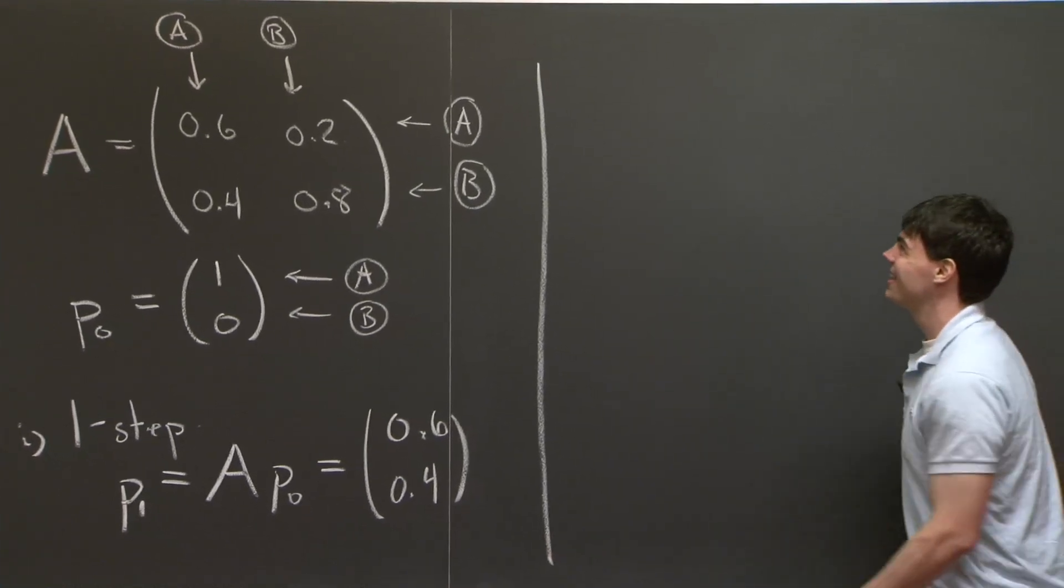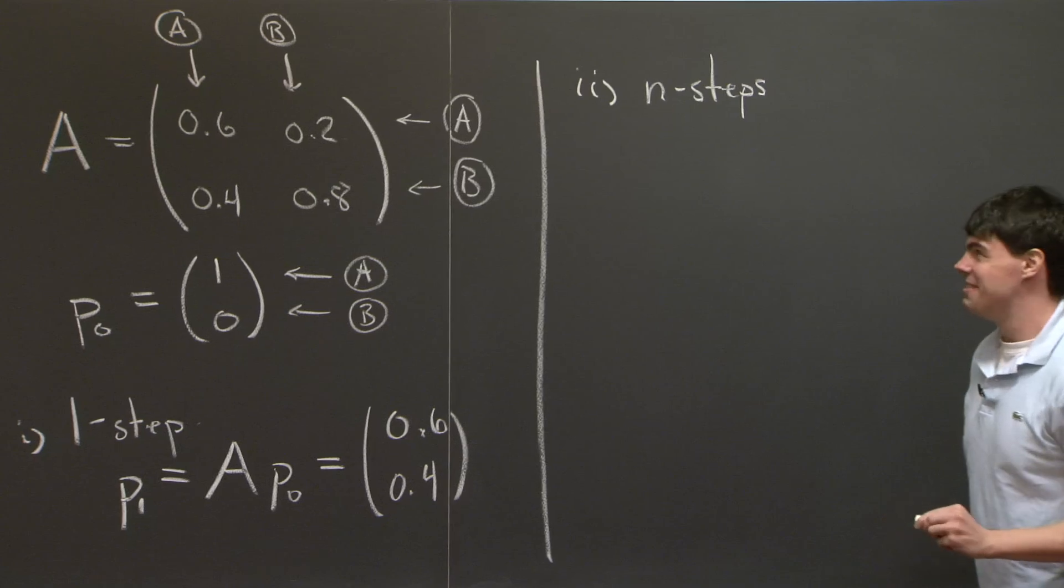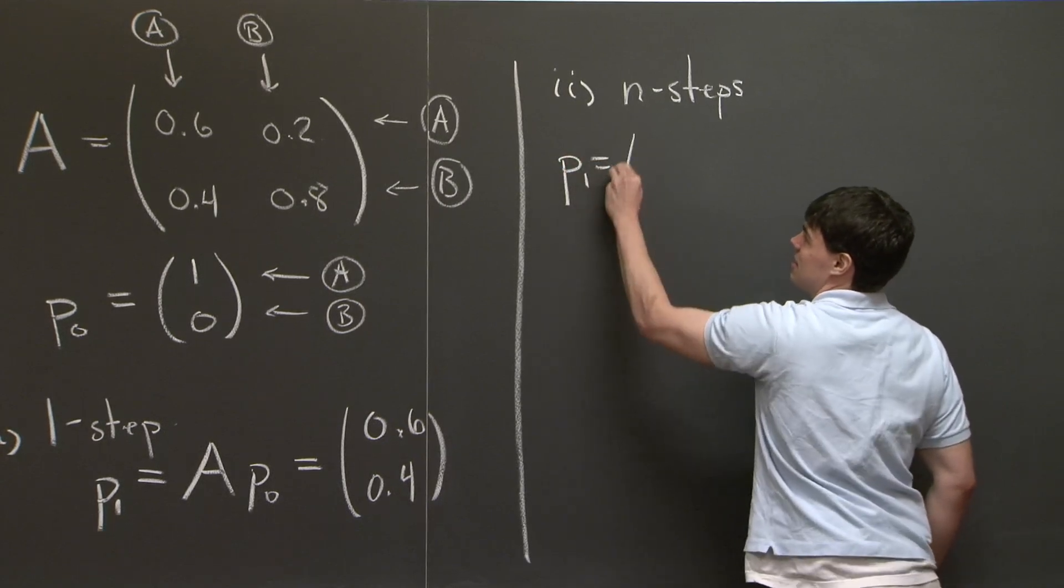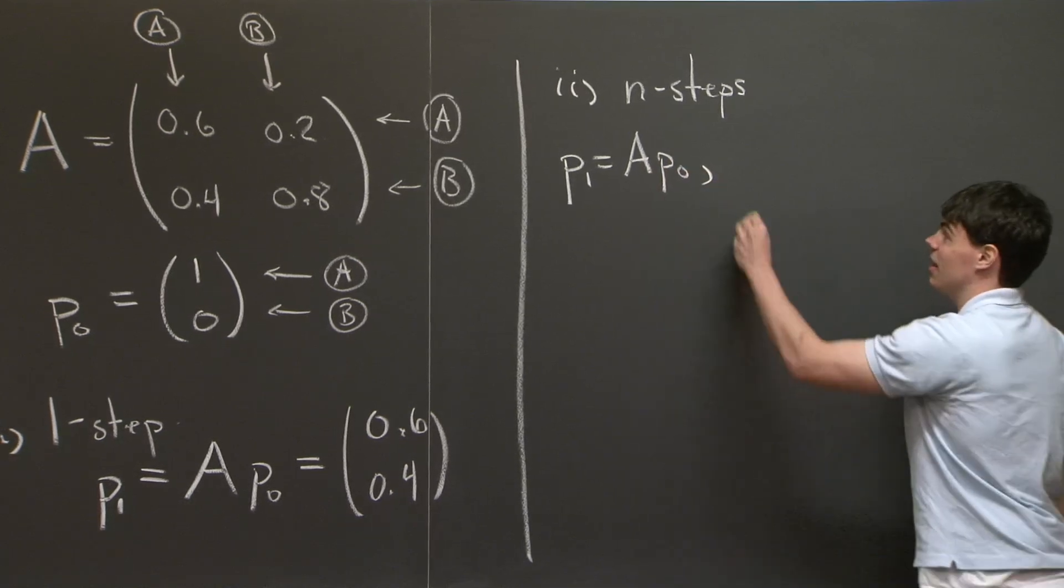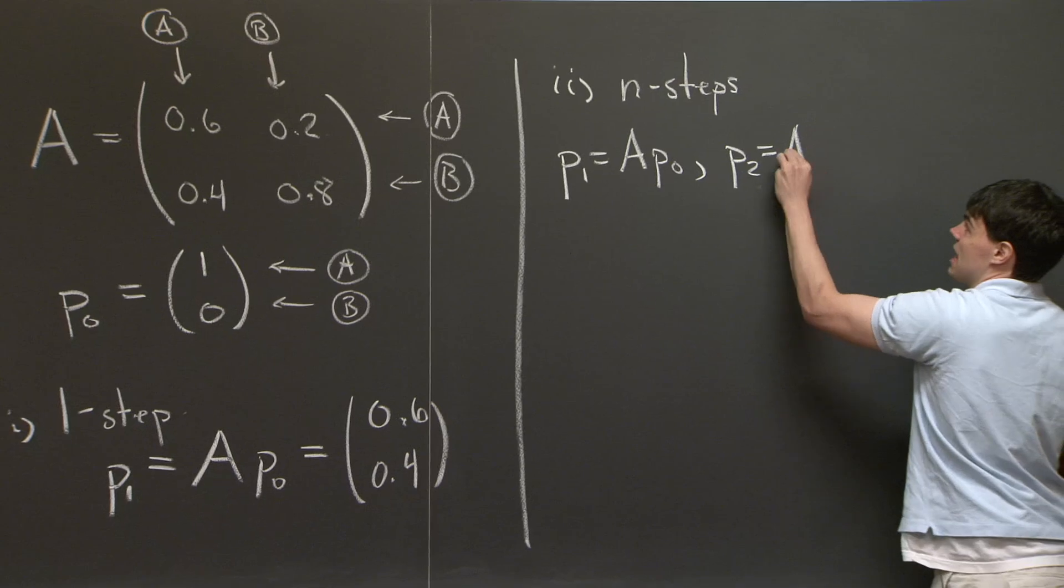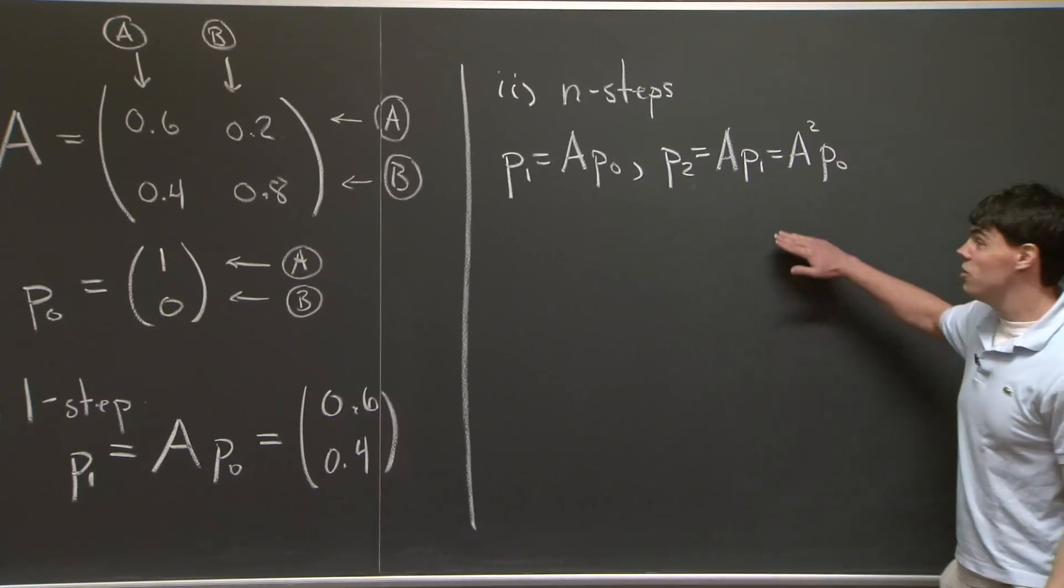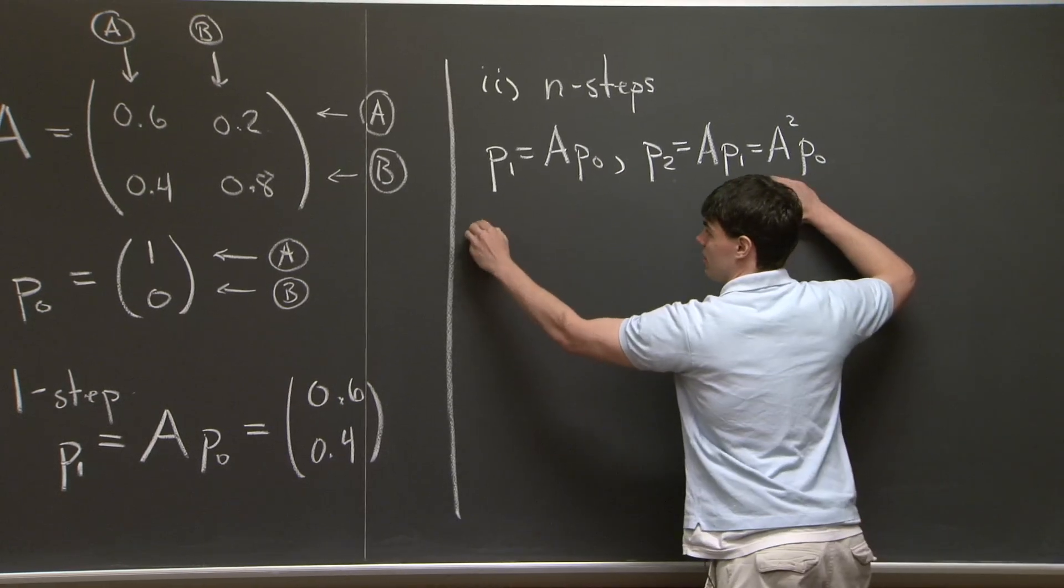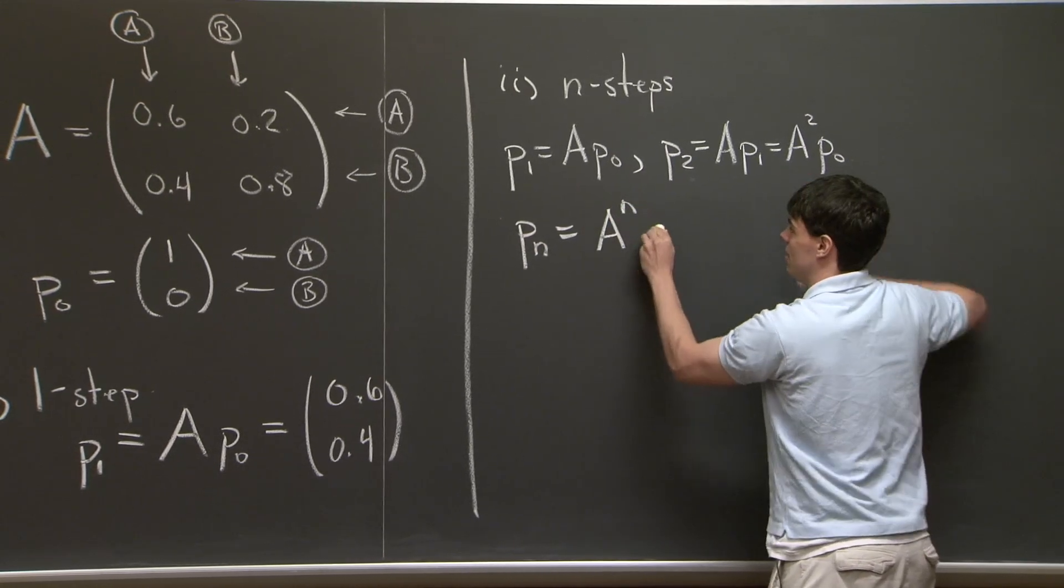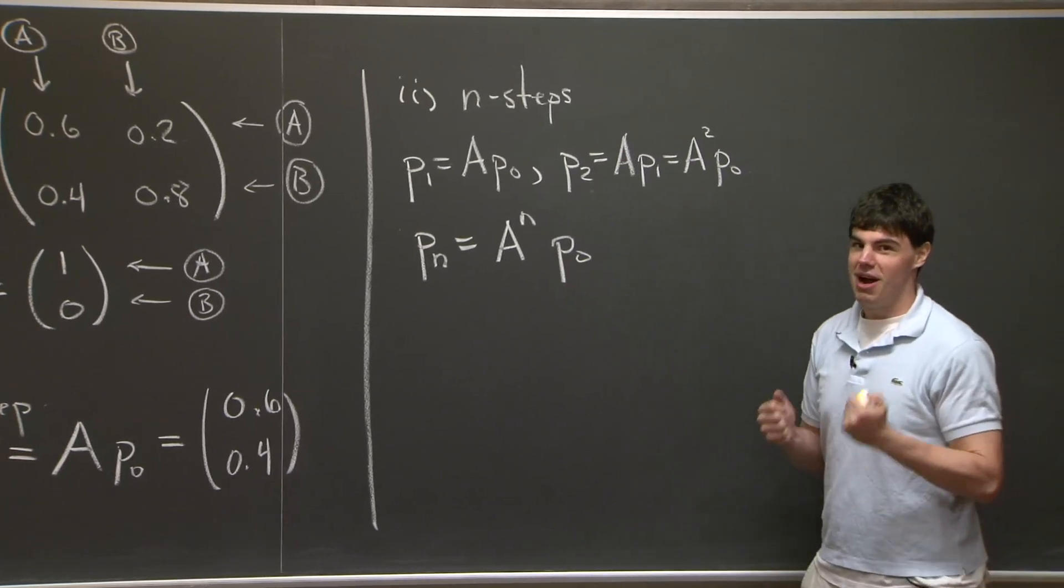Now part two is a little trickier. So part two is n steps. And to tackle this problem, we need to use a little more machinery. So first off, I'm going to note that p1 is A times p0. Likewise, p2, so this is the position of the probability distribution of the particle after two steps. This is A times p1, which is A squared times p0. And we note that there's a general trend. After n steps, so pn, the general trend is it's going to be this matrix A raised to the nth power multiplying the vector p0. So how do we take the nth power of a matrix? Well, this is where we use eigenvectors and eigenvalues.